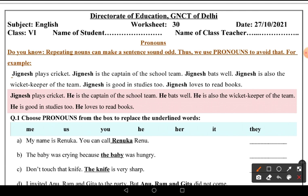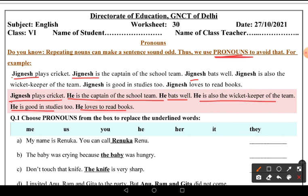Now what do we do? We write pronouns instead, and we will see how the sentence looks. Jignesh plays cricket. He is the captain of the school team. He bats well. He is also the wicket keeper of the team. He is good in studies too and he loves to read books. In the first sentence Jignesh was repeated many times, but in the second sentence 'Jignesh' is a noun and 'he' is a pronoun, and after using pronouns the sentence sounds much better.